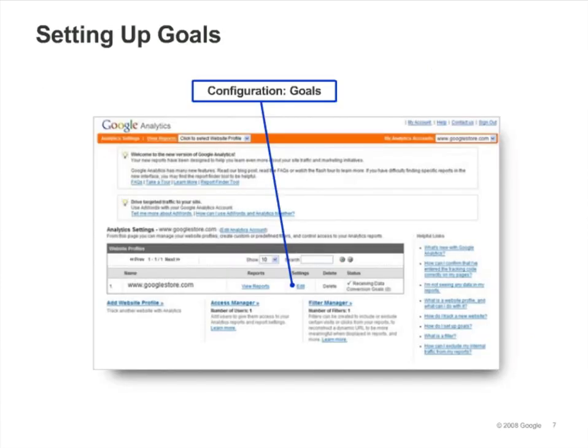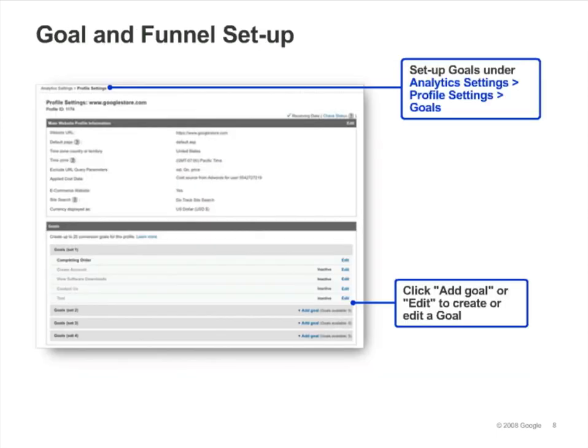To set up a goal, first go to the analytics settings page and edit the profile for which you want to configure a goal. Once you are on the profile settings page, look for the goals section.